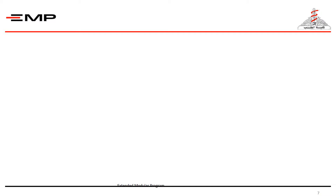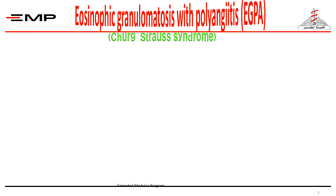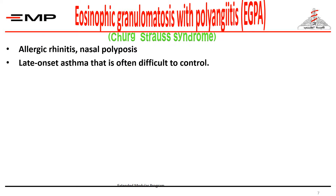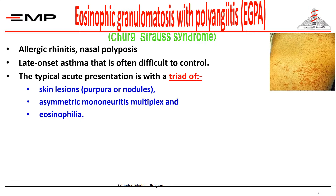The second ANCA-associated vasculitis is Eosinophilic Granulomatosis with Polyangiitis, also called Churg-Strauss Syndrome. Features include allergic rhinitis, nasal polyposis, and late-onset asthma — that is, asthma occurring at a later age than typical — which is often difficult to control. The typical acute presentation includes a triad of skin lesions such as purpuric eruptions or nodules.